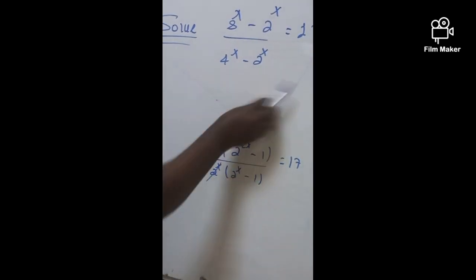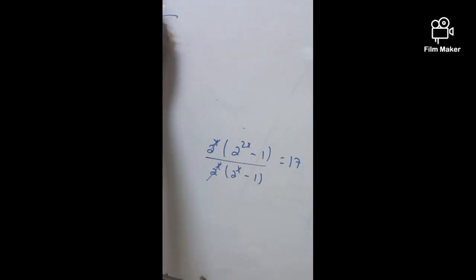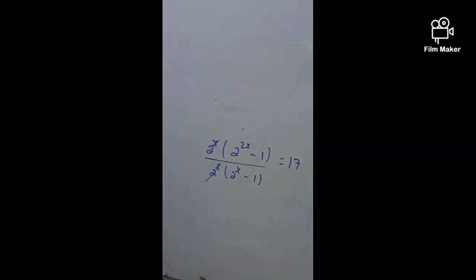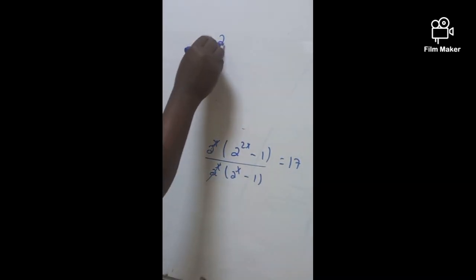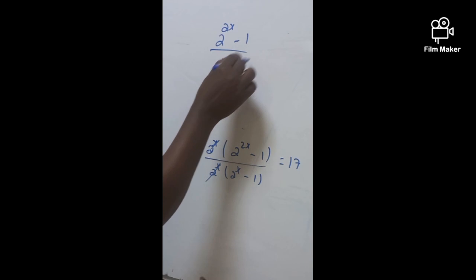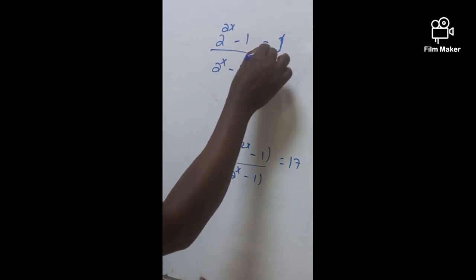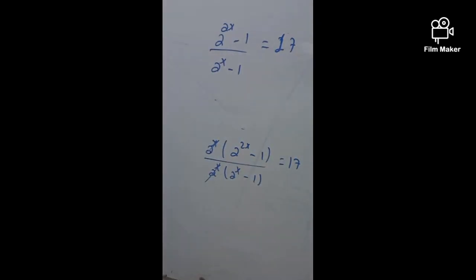Now, finally what we're going to do - this is the result that we have: (2^(2x) - 1) / (2^x - 1) = 17. In order to simplify the left expression, what you're going to think about is the difference of two squares.